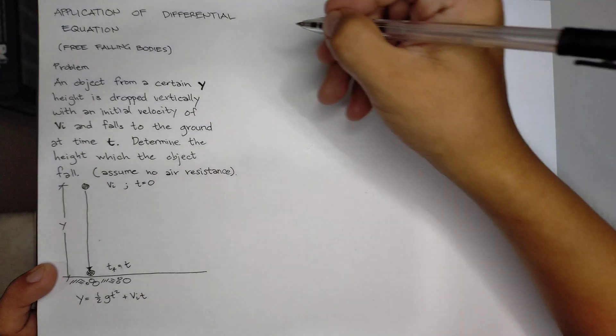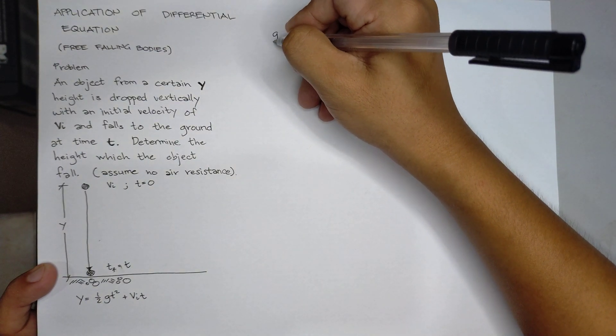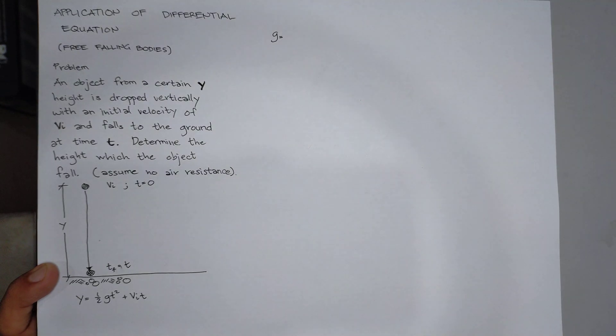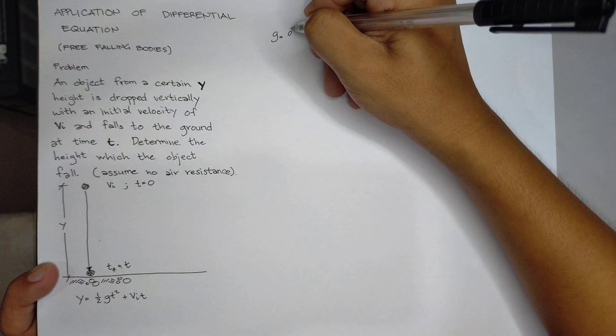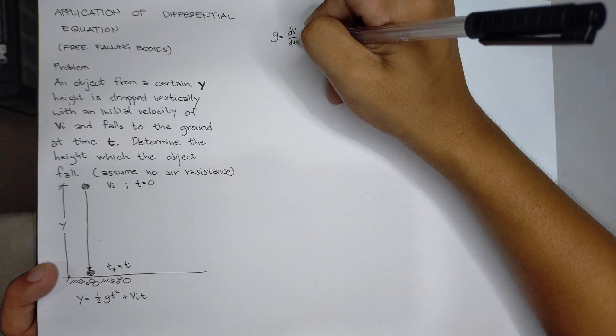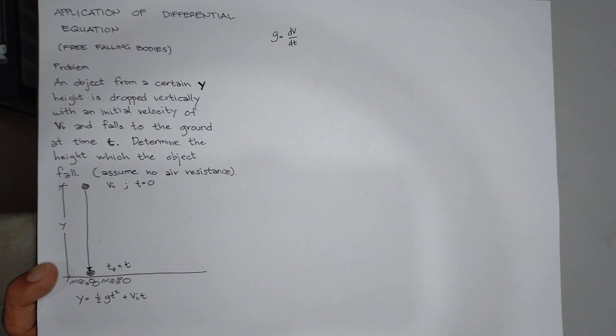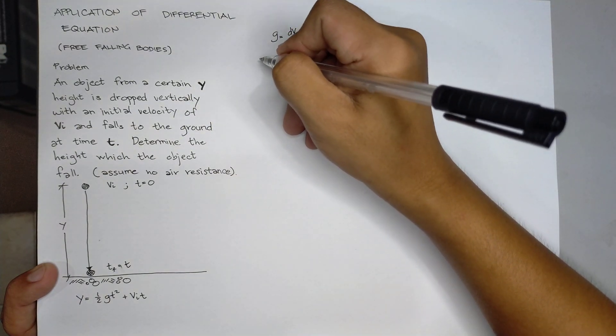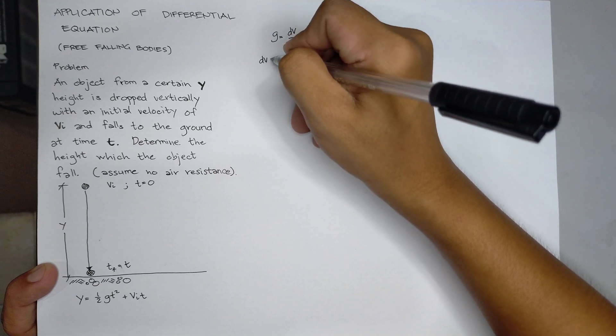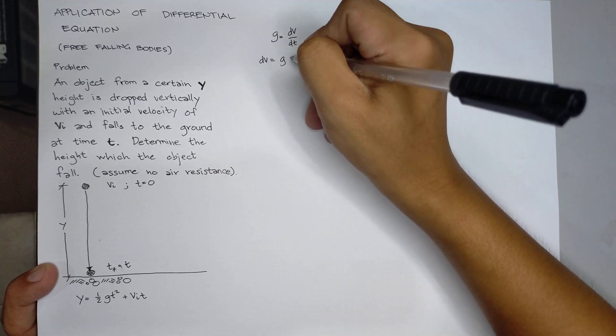We know that acceleration is defined as the derivative of velocity with respect to time. So from here, we cross-multiply, we have dv equals g dt.